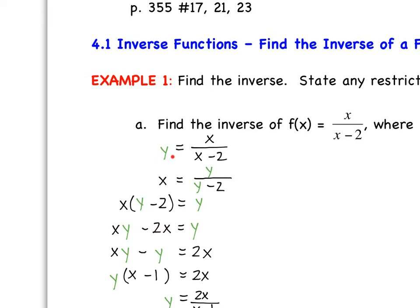Step one: substitute f(x) for y. Now we switch x and y. Notice there were two x's, so now there are two y's. We want to solve for y, but notice I've got two y's and one of them is in the denominator. So what we want to do here is essentially cross multiply. When we do that, we are left with x times (y − 2) equals y.